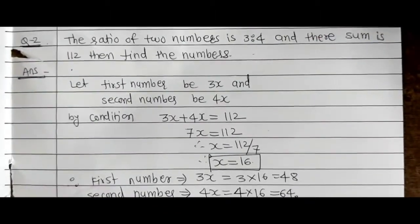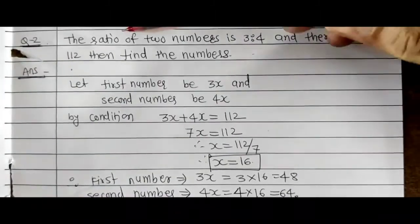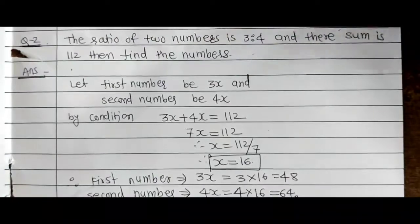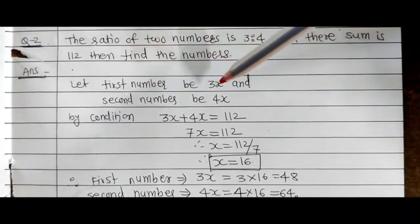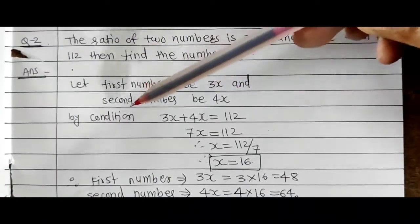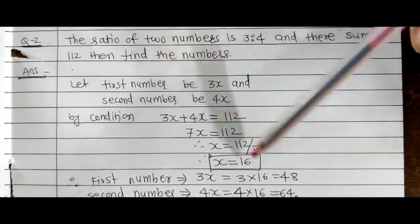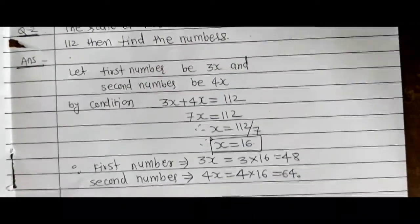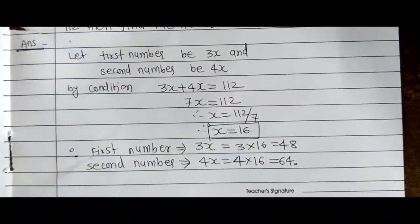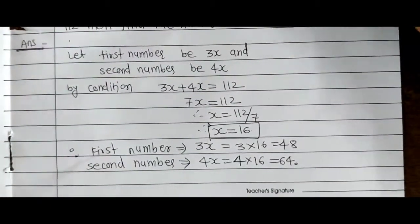Question number 2: the ratio of two numbers is 3 to 4 and their sum is 112, then find the numbers. Let first number be 3x and second number be 4x. By the same method as the first example — solve accordingly.